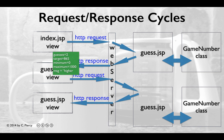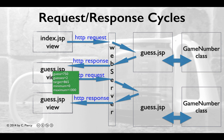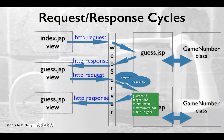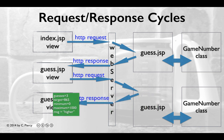The player reviews the values and makes their next guess. When they click Go again, a new request is generated back to Guess.JSP. Once the web server receives the request, new request and response objects are created to handle this request and response — these are different from the previous ones. Guess.JSP and the GameNumber class process the data to update the number of guesses and change the message accordingly. The response is received by the client, which renders the values for the player. This continues until the player makes the correct guess.